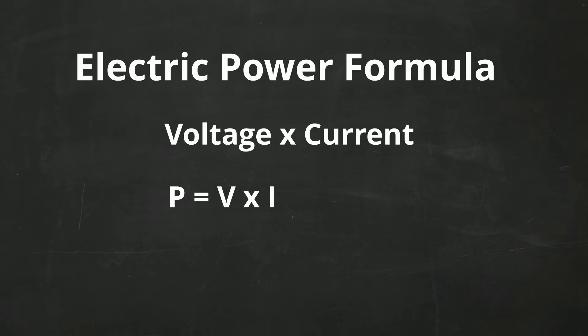V is for voltage and I is for current. It uses I, by the way, because it's current intensity.